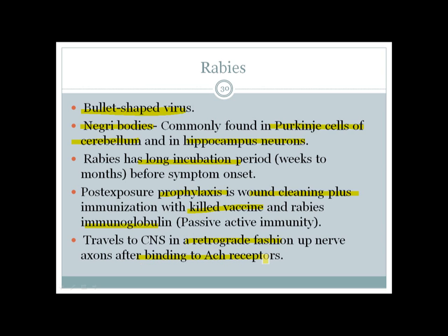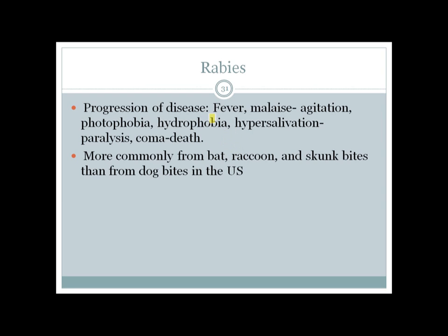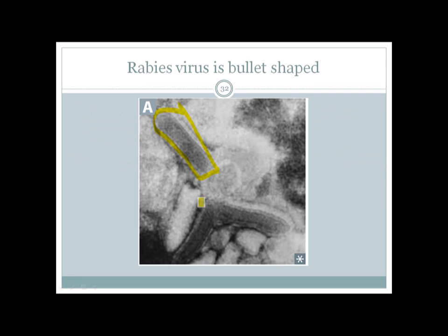Rabies progresses with fever, malaise, agitation, photophobia, and most importantly hydrophobia — severe spasm of throat and upper esophagus muscles when attempting to drink water. The patient also has hypersalivation, then ultimately paralysis and coma. In the US, rabies is most commonly from bat, raccoon, and skunk bites rather than dog bites, though dog bites are more common in other countries.